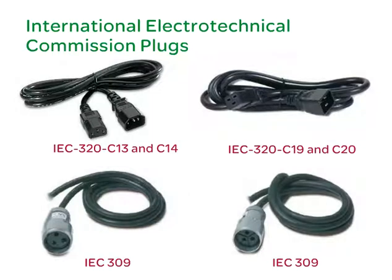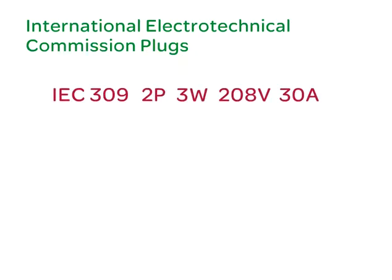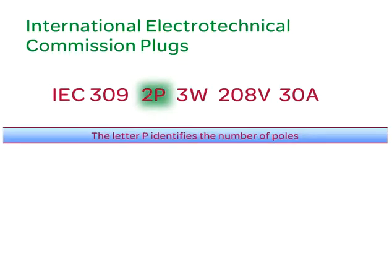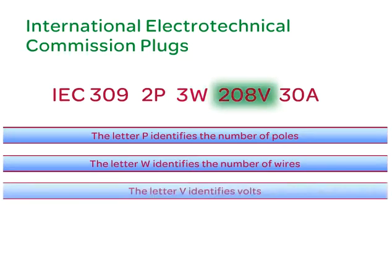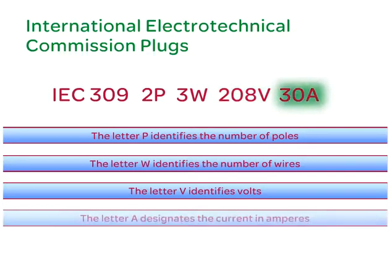The IEC 309 2P3W 208 volt 20 amp, for example, is rated at 20 amps, and the IEC 309 2P3W 208 volt 30 amp is rated at 30 amps. In the IEC 309 naming convention, the letter P identifies the number of poles, the letter W identifies the number of wires, V identifies volts, and A designates the current in amps.